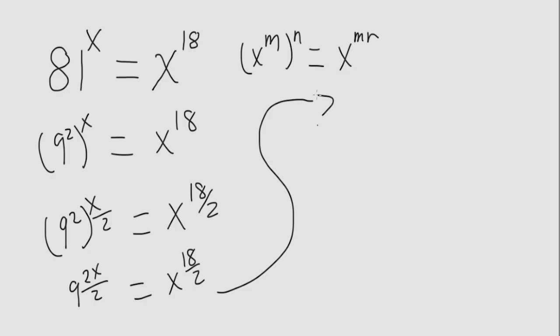Carrying this up here. The 2's here cancel and we get 9 to the x is equal to x to the 9. 18 divided by 2 is 9.